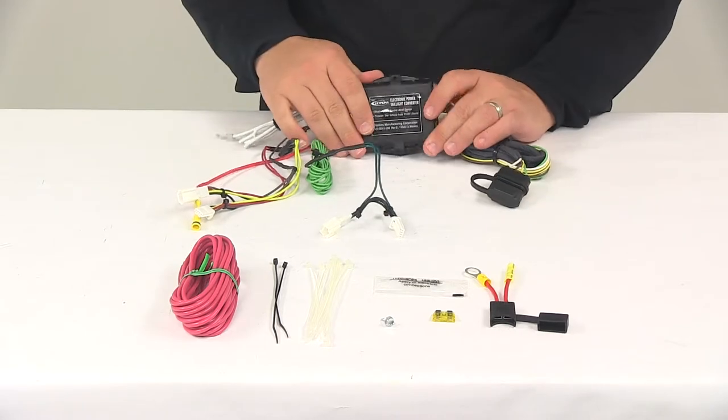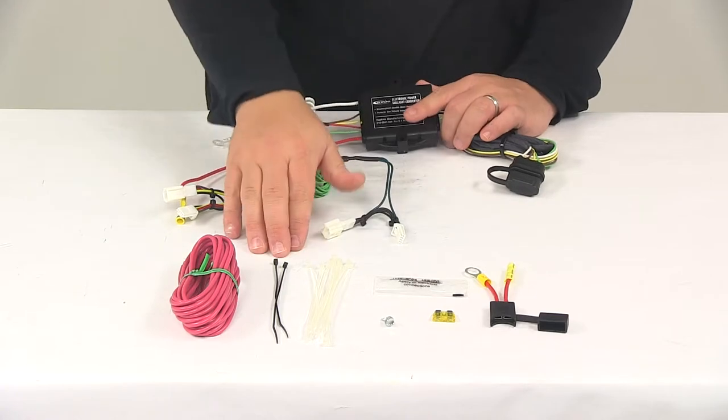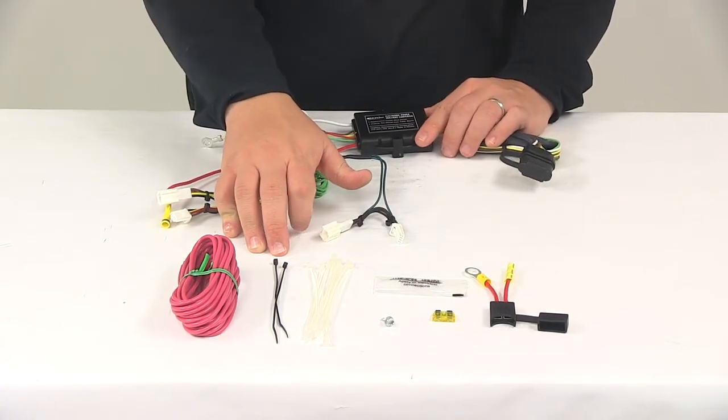Then you'll need to mount the converter box. It's got a couple holes, one on each side. That way you can get it secured out of the way using the zip ties or cable ties provided with the kit.